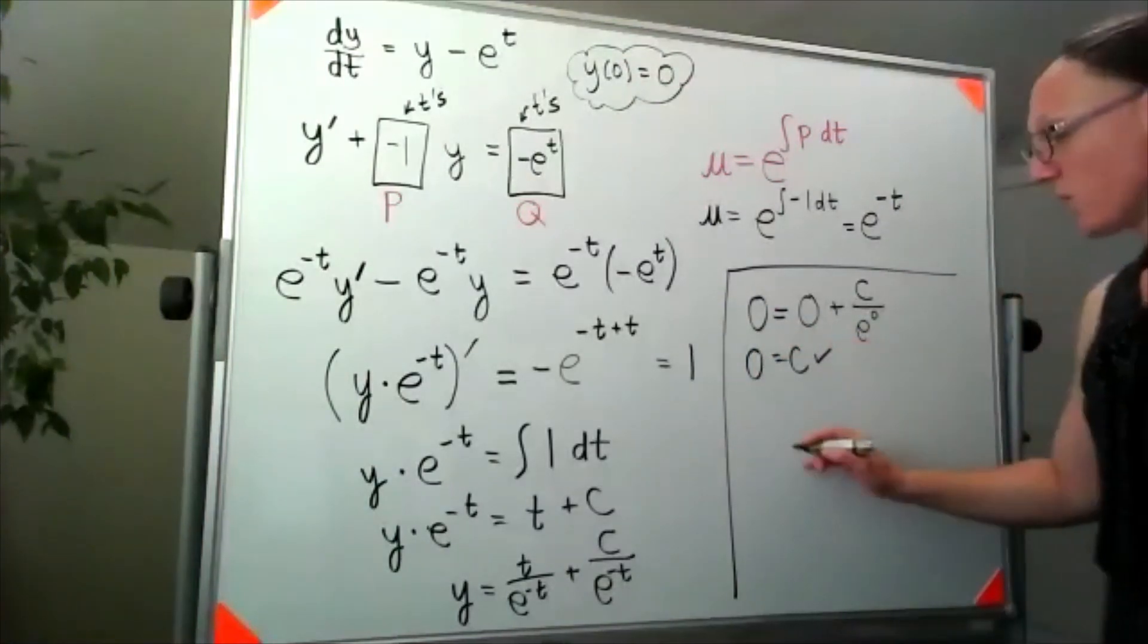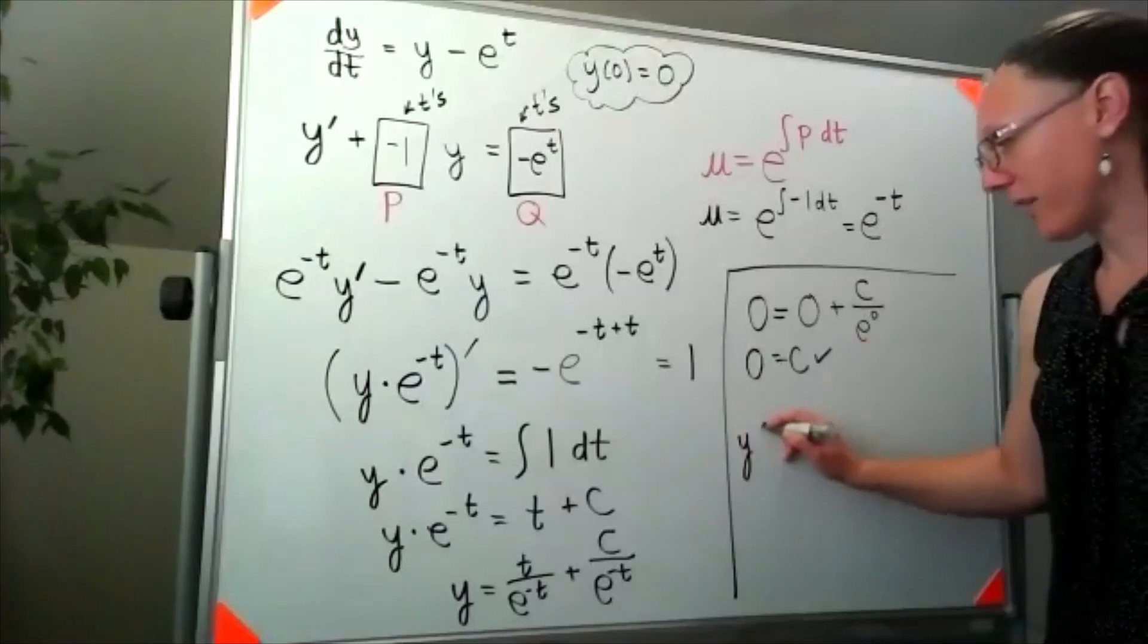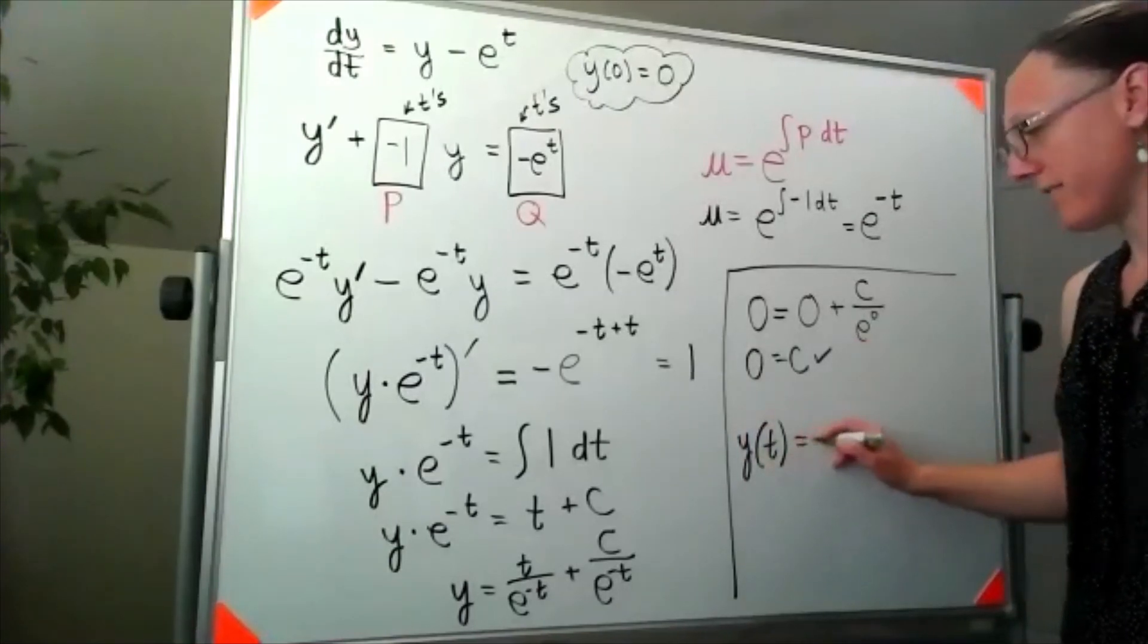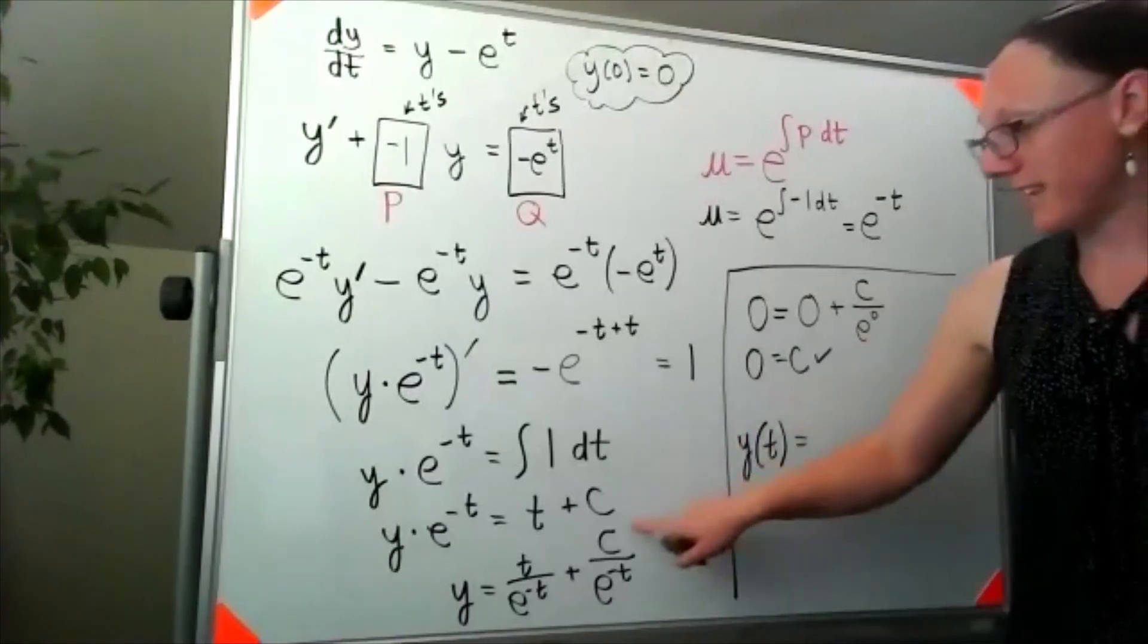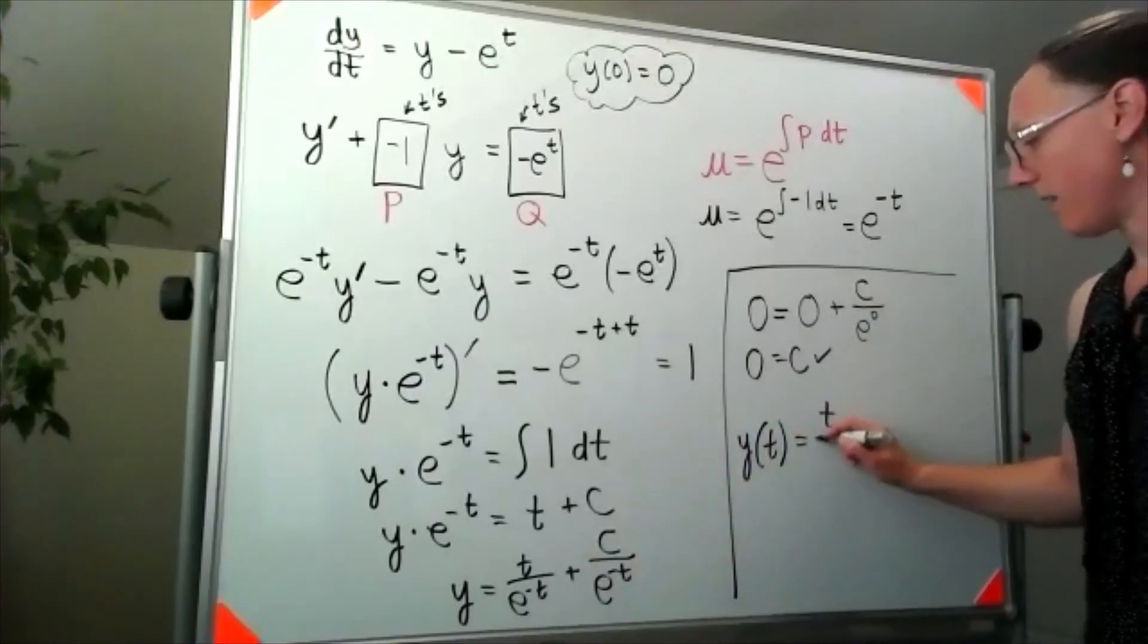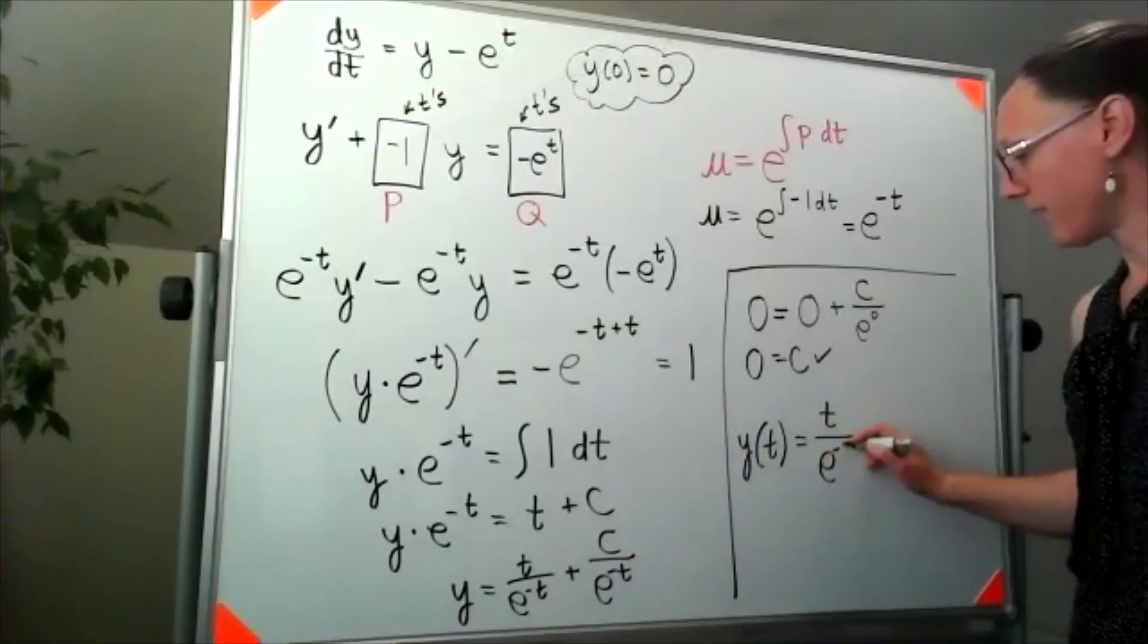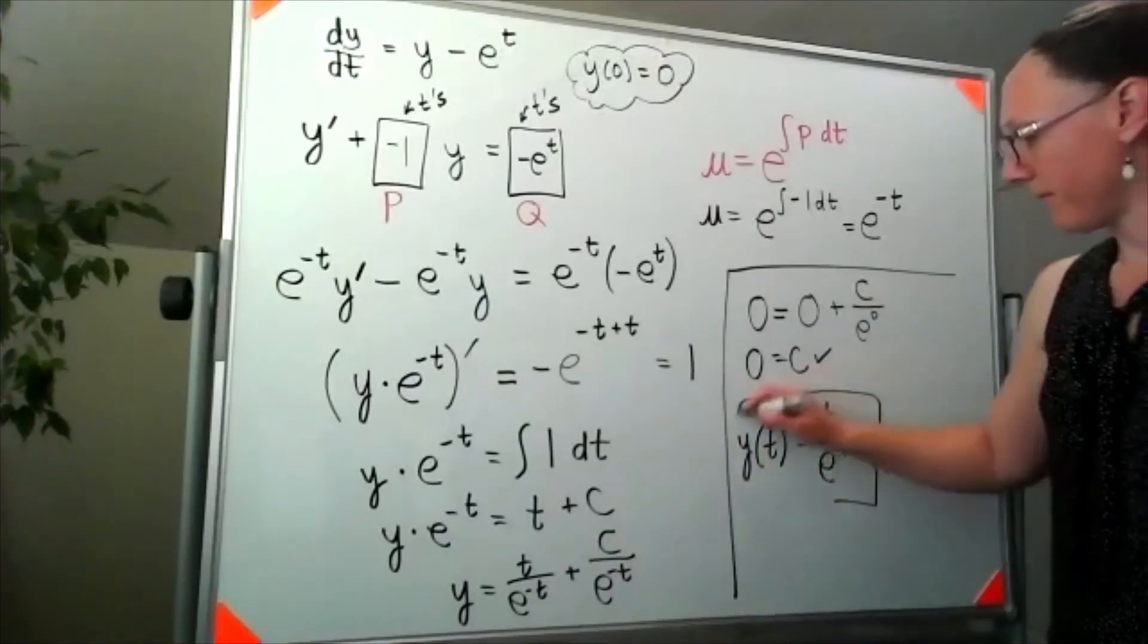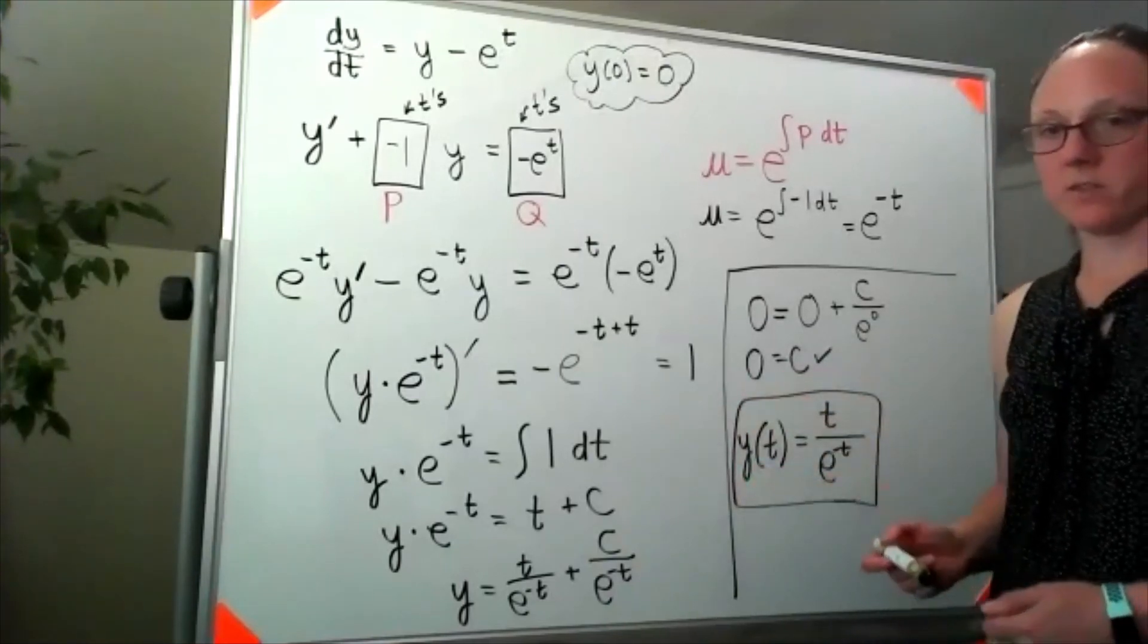So our final answer here would look like y of t—if c is zero, then this whole piece goes away—and I get t over e to the negative t. And that's my final solution.